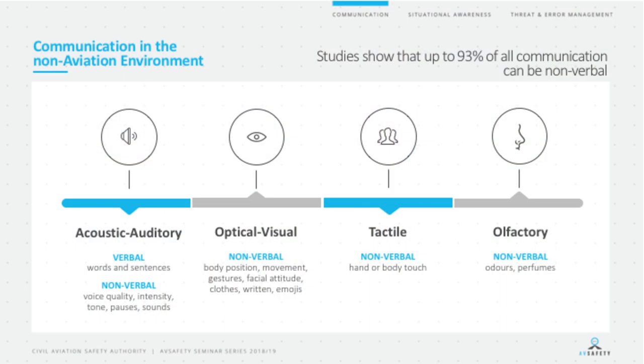This raises the question: how do we as human beings communicate in the non-aviation environment? Studies at universities worldwide show the vast majority of human communication is non-verbal rather than verbal — some studies show up to 93% of our communication as humans occurs non-verbally. This includes acoustic means such as tone of voice, expression, and use of pauses, as well as optical or visual means like body language.